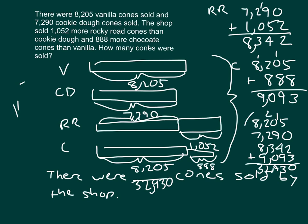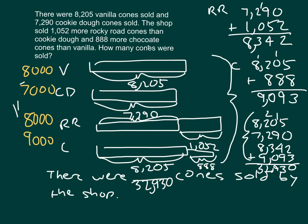Let's look at some estimates. Vanilla is about 8,000. Cookie dough, 7,290, is about 7,000. For Rocky Road, 1,052 is about 1,000 more than 7,000, so approximately 8,000. For chocolate, 888 more than vanilla is about 1,000 more than 8,000, giving 9,000. Adding 8,000 plus 7,000 plus 8,000 plus 9,000 equals 32,000, which is close to our exact answer of 32,930 cones. So the answer is reasonable.